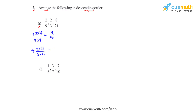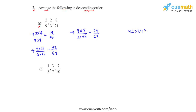For the third fraction, 8 over 21, to get the denominator as 63 we multiply both numerator and denominator by 3, giving us 24 over 63. Now, since 42 is greater than 24, which is greater than 14 — those being the numerators of the three converted fractions — we can say that 2 thirds is greater than 8 over 21, which is greater than 2 over 9.